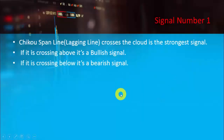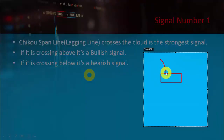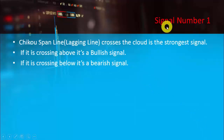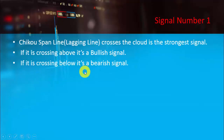Similarly, if Chikou Span is going to cross the cloud from the upward side toward the downward side — crossing below — then it's a bearish signal. If it comes from the upward side and crosses the cloud downward, we get a sell call, and the market goes for a downward fall into a bearish trend. So interpretation number one: Chikou Span crossing above = bullish; crossing below = bearish. Now we'll go to MT4.